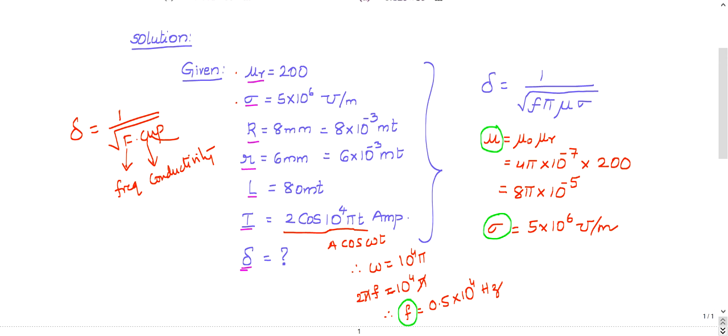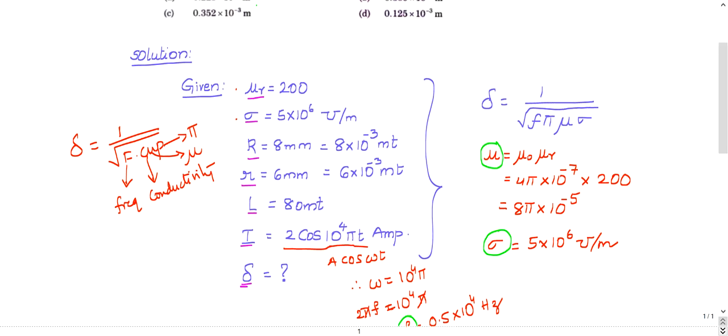C indicates conductivity, then μ like mu, and P indicates π value. So in this way you should remember skin depth means 1/√(FIFA cup). This is an easy technique to remember this formula.